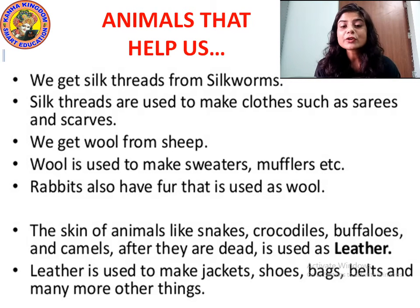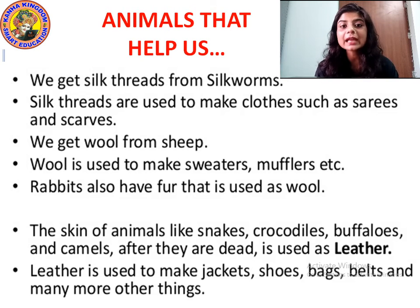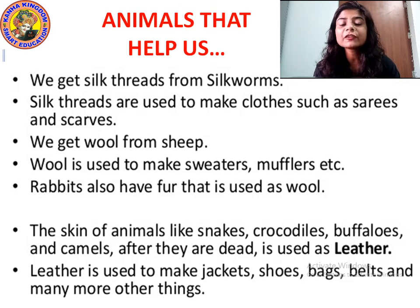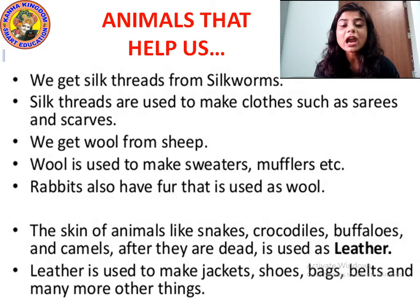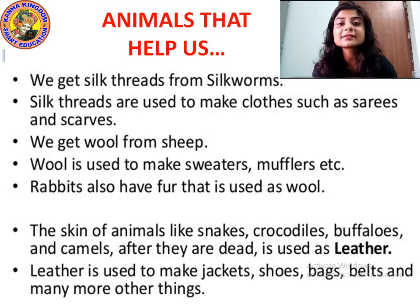Now let us study more about animals that help us. We get silk threads from silkworm. Silk thread is a kind of thread used to make clothes. Silkworms are insects that weave silk thread through which we can make clothes such as saris and scarves. The beautiful silk sarees that your mama wears are made from silk thread obtained from silkworm.